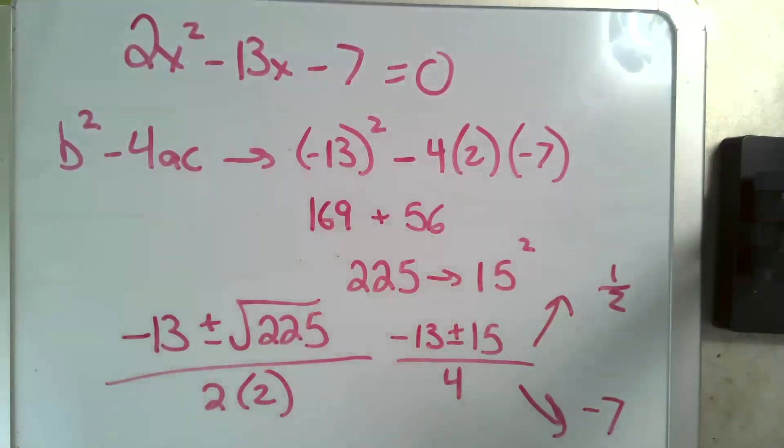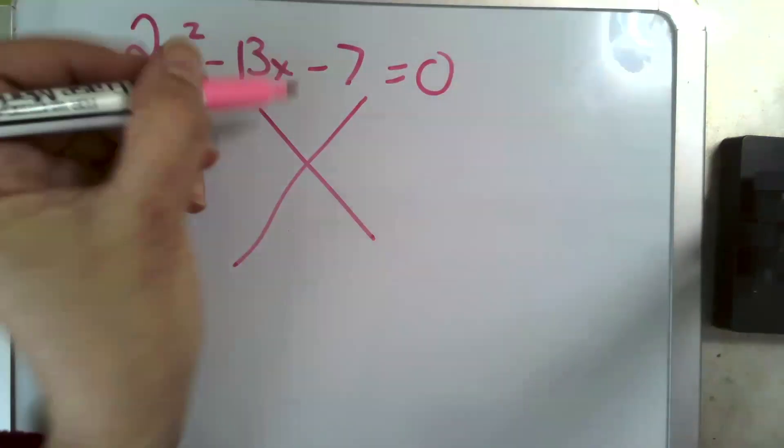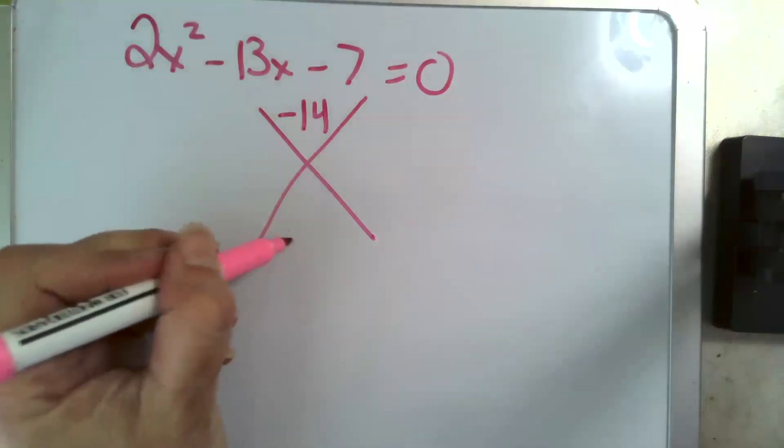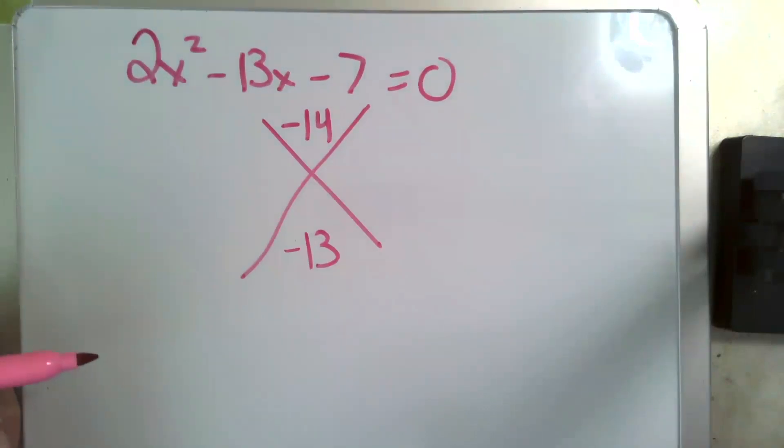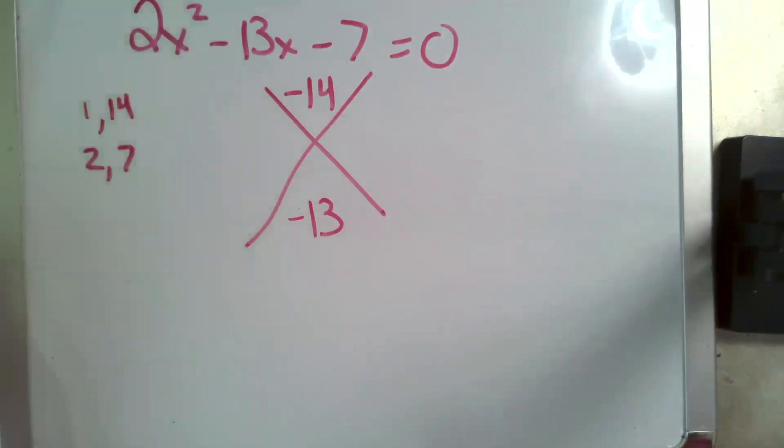Or, if you love factoring, let's go ahead and use the x method. Up top, we have a times c, negative 14. Down below, we have our b, negative 13. We're asking ourselves what multiplies to negative 14, adds to negative 13. A quick factor list shows us we're going to be wanting to use our one and 14.